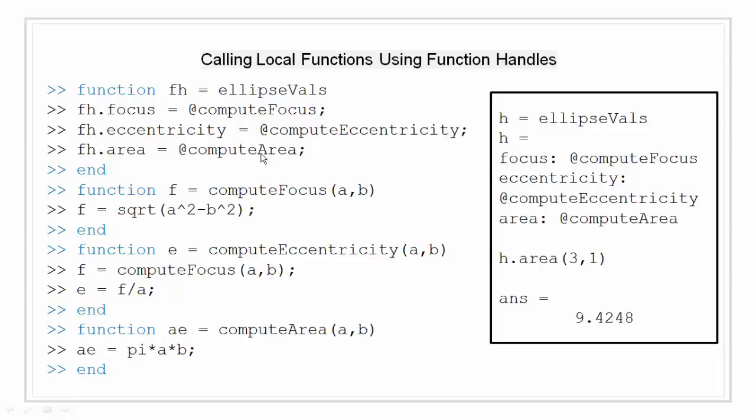All these three functions have handles that are defined in the main function that is the ellipseVals function. They are assigned to a structure with field name focus, eccentricity and area respectively. The function will return structure with first field name focus that is handled to the function computeFocus, second field name eccentricity that is handled to function computeEccentricity and then we have a field name area that is handled to the function computeArea.